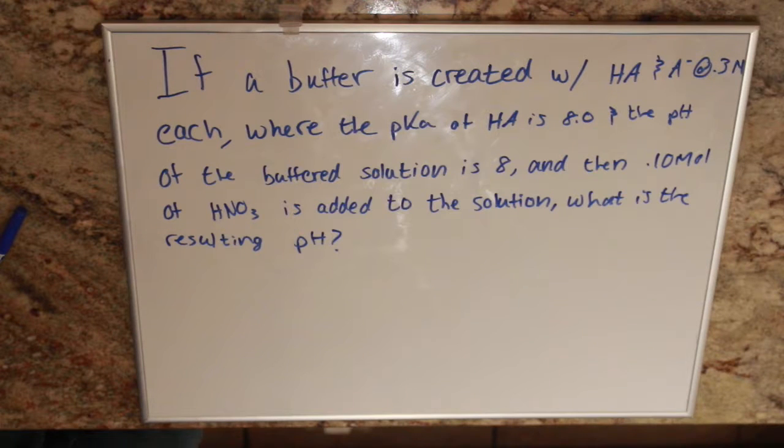So our question is, if a buffer is created with HA and A concentrations at 0.3 moles each, where the pKa of HA is 8 and the pH of the buffer solution is 8, then we add 0.10 moles of nitric acid to the solution, what is the resulting pH?